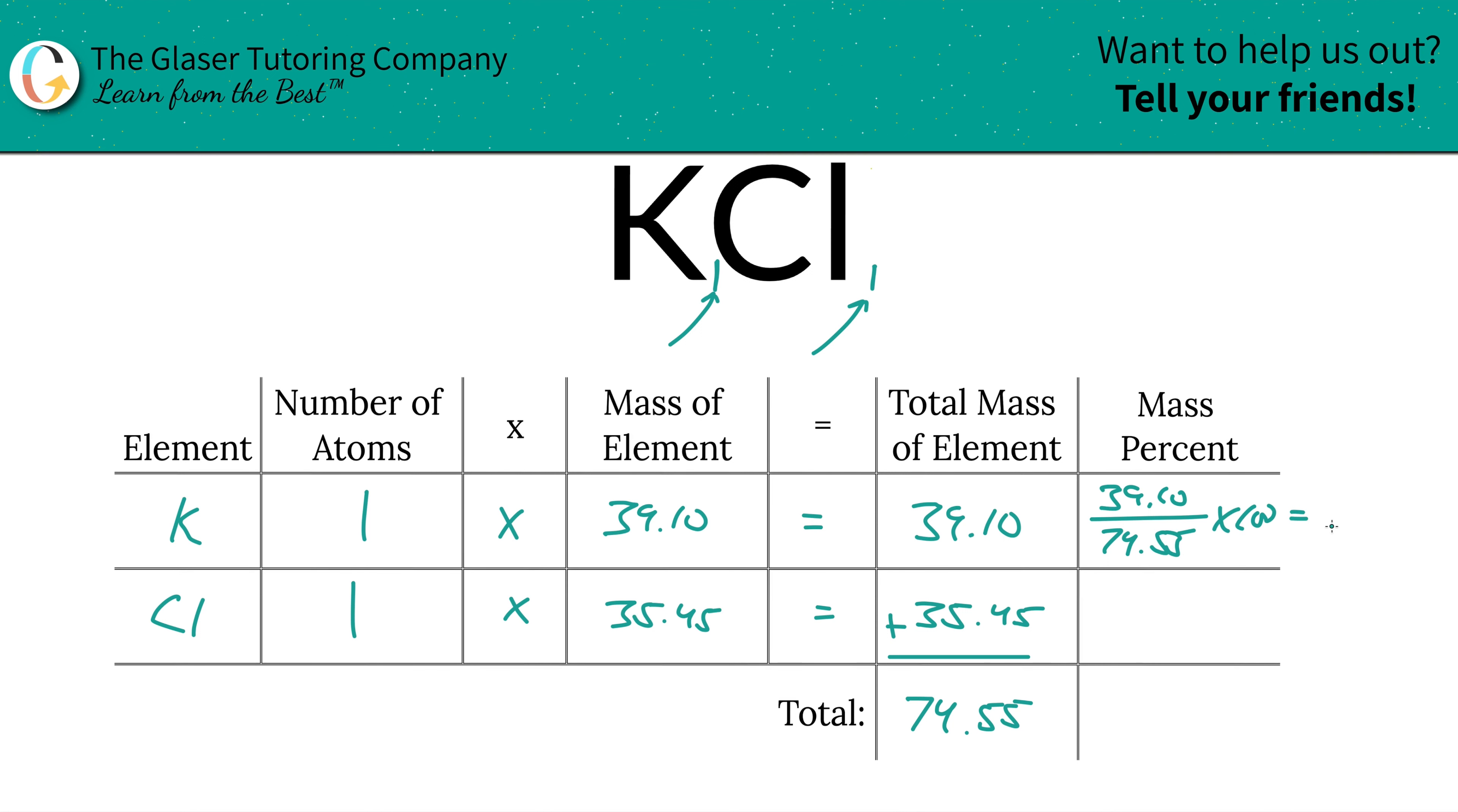And we're simply going to find the percent here is going to be 52.45%. We do the same exact identical process now for chlorine.